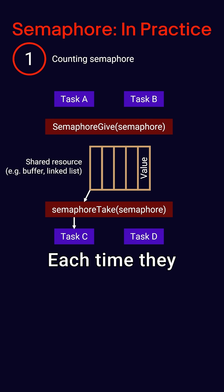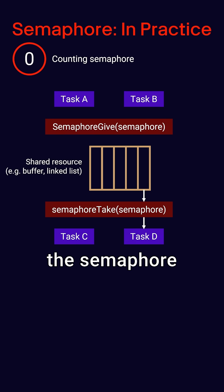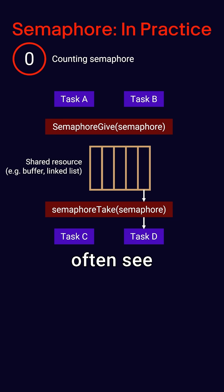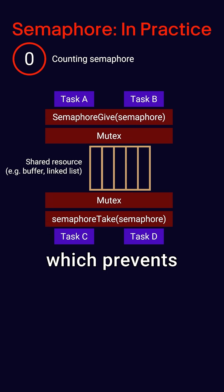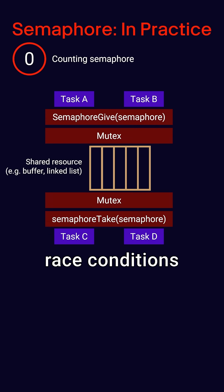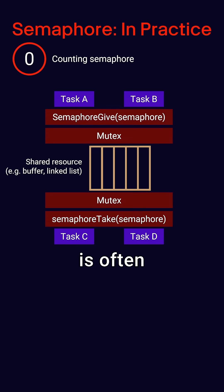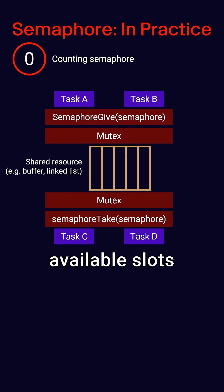Each time they do, they decrement the semaphore by one. Note that you'll often see a mutex used to protect reading and writing to the buffer, which prevents race conditions. A separate semaphore is often used to track the number of available slots in the buffer.